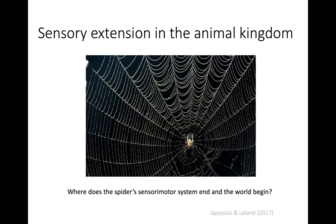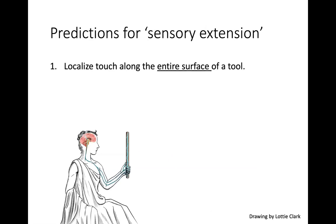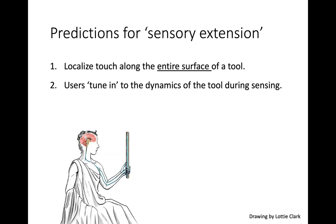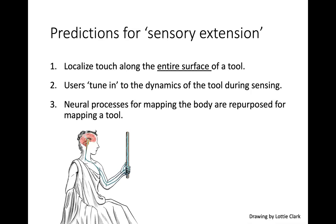This was a big inspiration for us to look at sensory extension during tool use. We made three predictions that would hint at some form of sensory extension. First, the user should be able to localize touch along the entire surface of the tool. Second, the user should be able to tune into the dynamics of the tool during sensing. And third, neural processes used for mapping touch on the body should be repurposed for mapping touch on a tool.